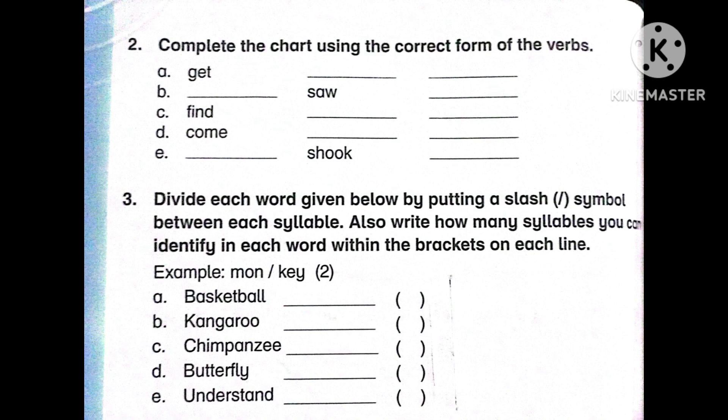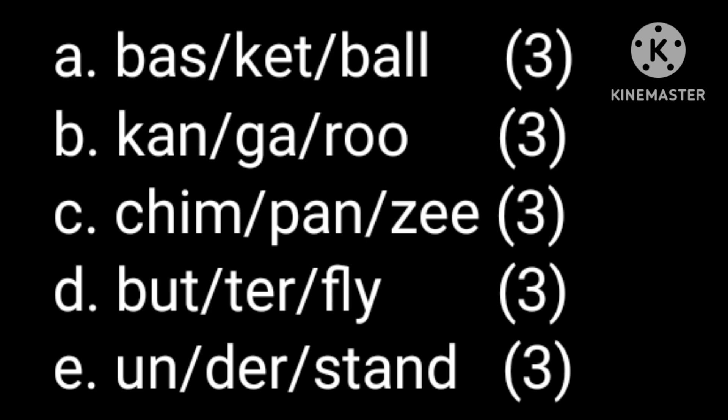The next question is question number three: Divide each word by putting a slash symbol between each syllable, and write how many syllables each word has. Example: 'monkey' — mon/key — 2 syllables. The words given are: basketball (bas/ket/ball — 3 syllables), kangaroo (kan/ga/roo — 3 syllables), chimpanzee (chim/pan/zee — 3 syllables), butterfly (but/ter/fly — 3 syllables), understand (un/der/stand — 3 syllables).